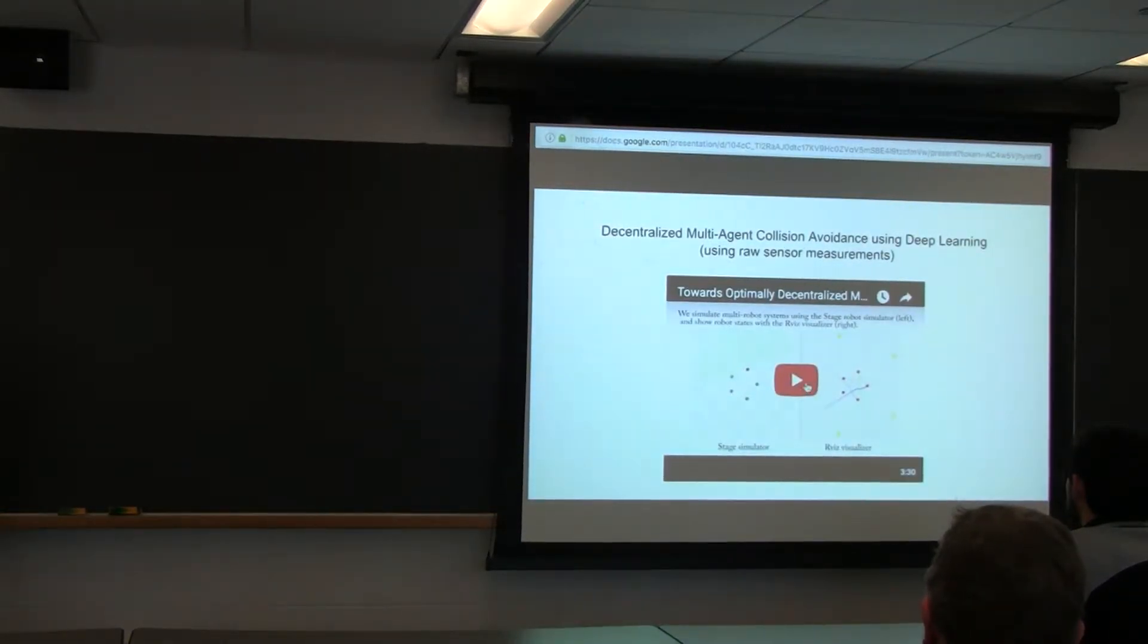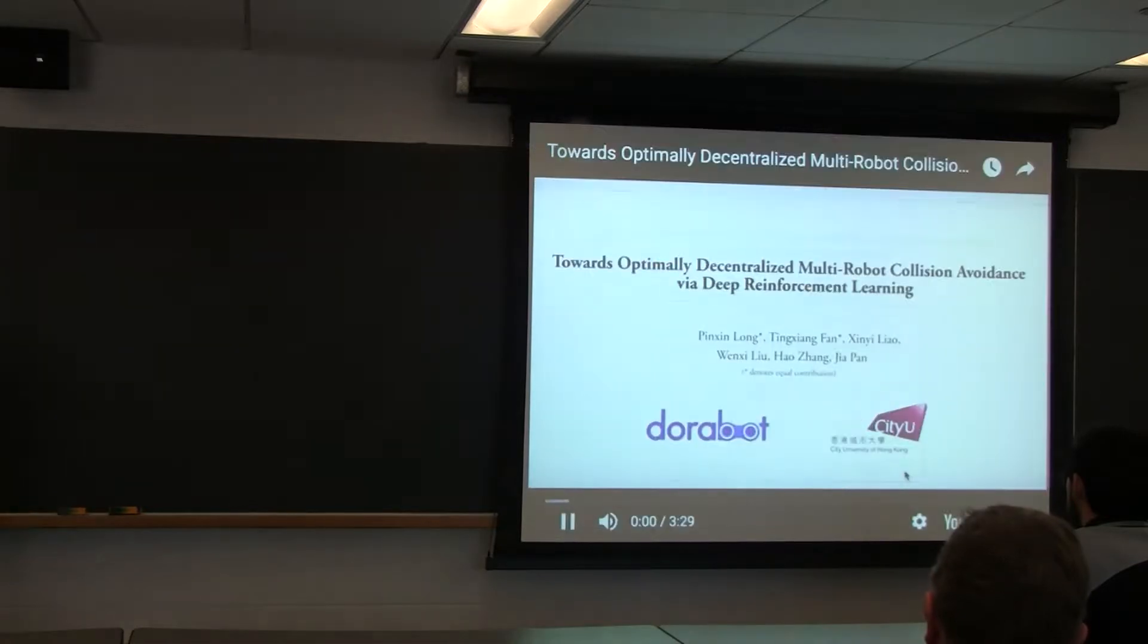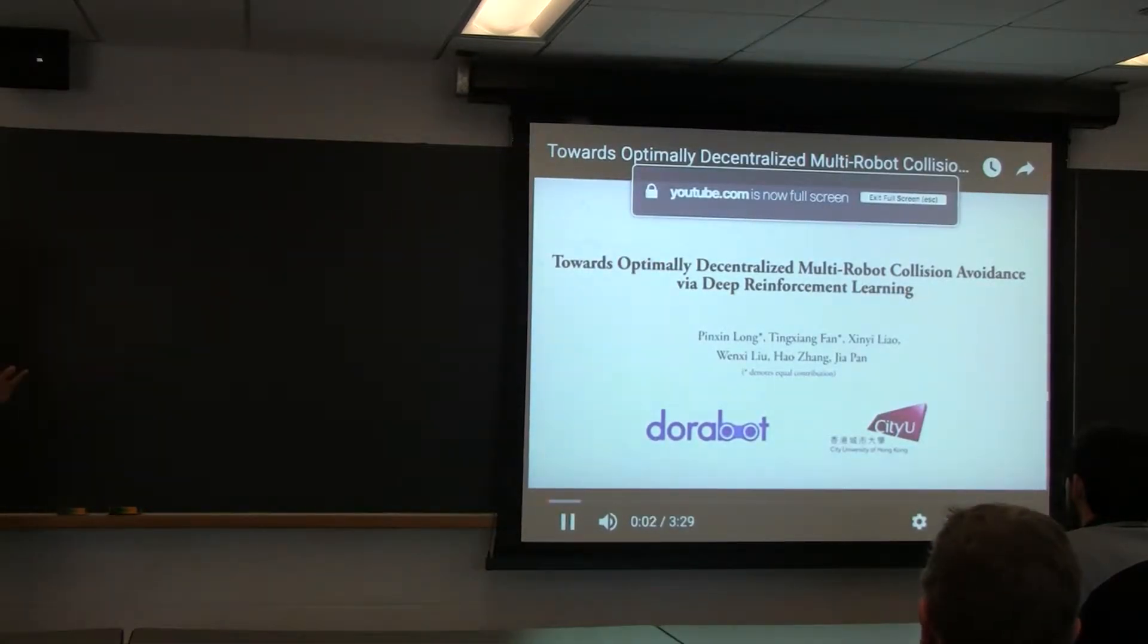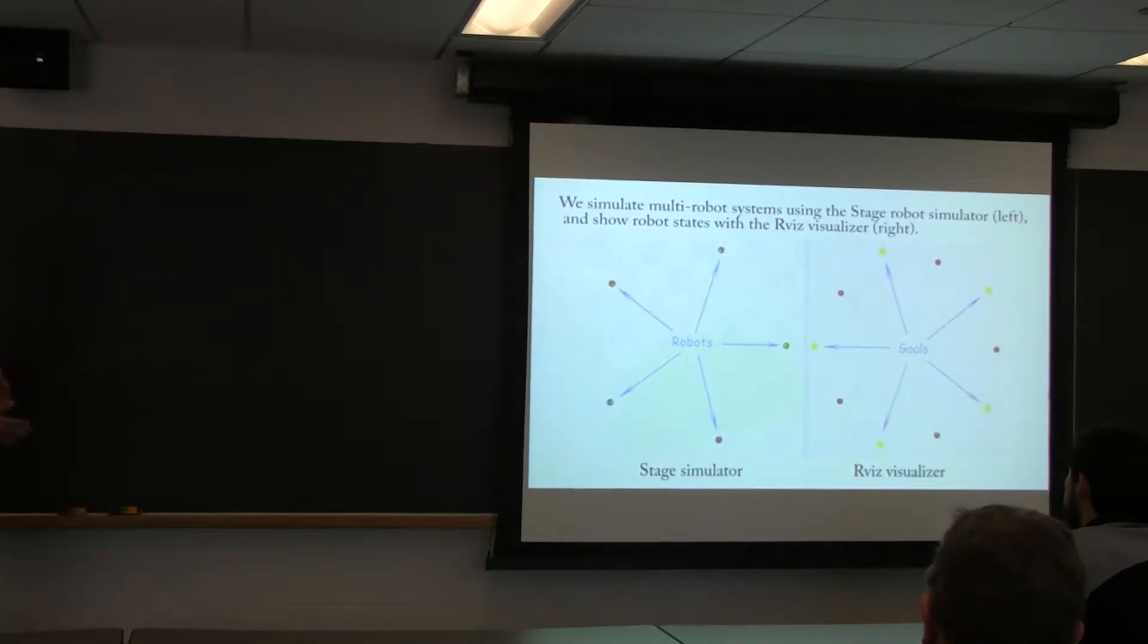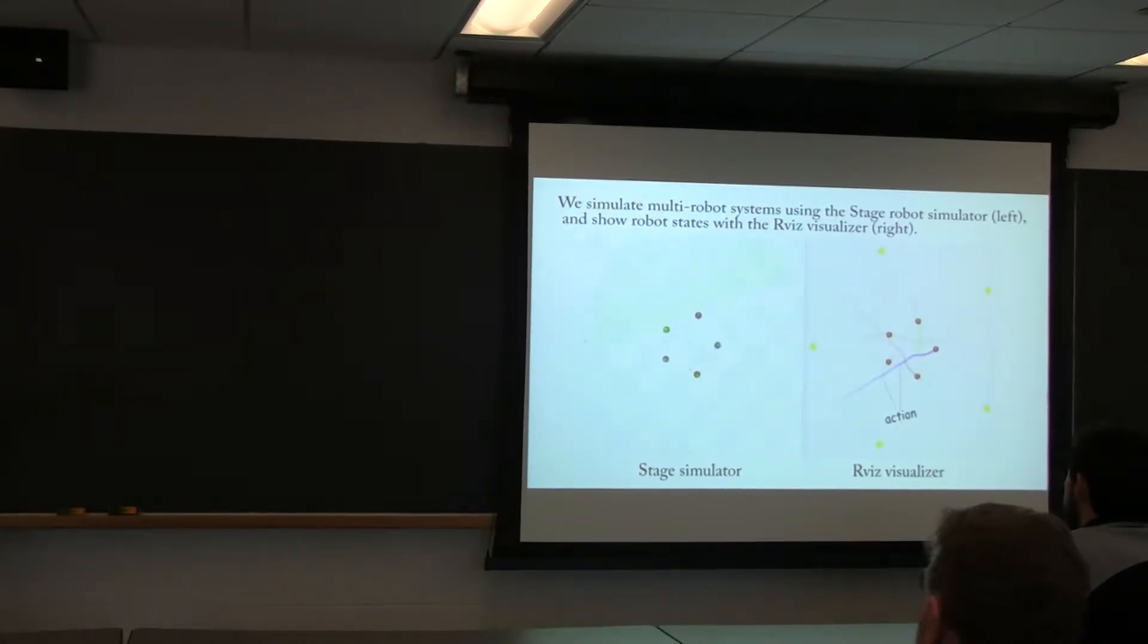There's actually another deep learning approach I found from the University of Hong Kong, which I found pretty interesting mainly because they take in raw sensor data into this network. So it's just feeding in directly the sensor measurements that the robots are getting into the network and computing out a velocity as well, which is kind of the whole idea of how the network works.